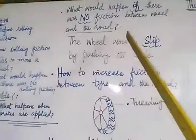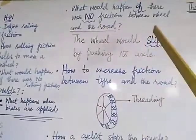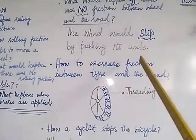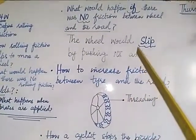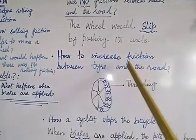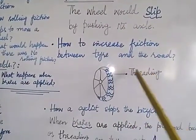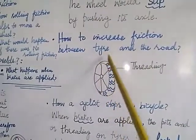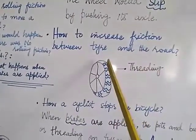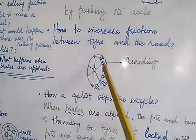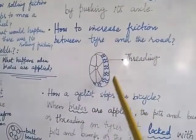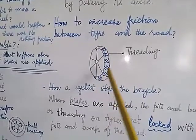What would happen if there was no friction between the wheel and the road? The wheel would slip when pushing its axle — yes, the wheel would slip if there was no force of friction. To increase the force of friction between the tire and the road, the tire has threading over its surface. Threading means any design found on the surface of the tire which is responsible for increasing the force of friction between the tire and the road.